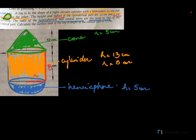We need to calculate the surface area of the toy. The height of the conical part is given as 12. So the height of the cone h = 12, and we need to find the total surface area.